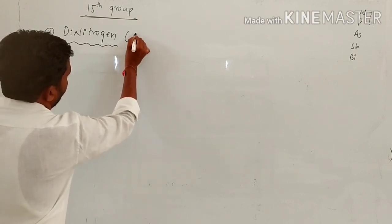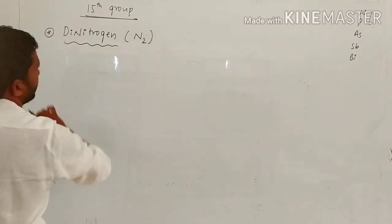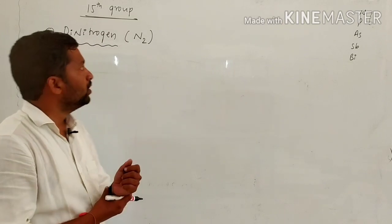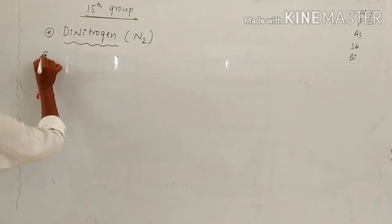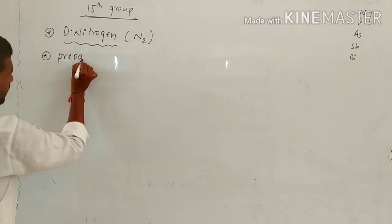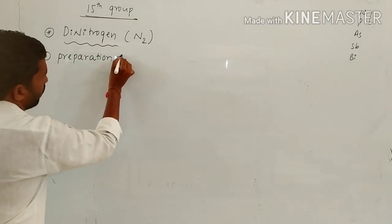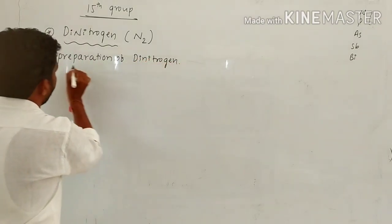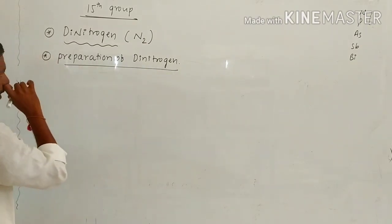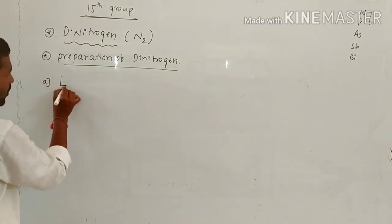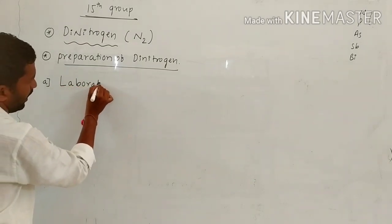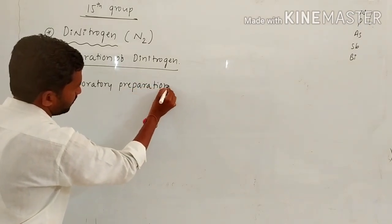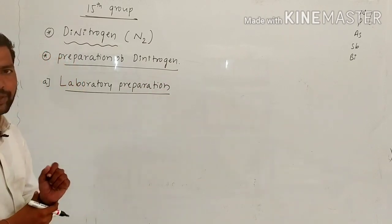This is the compound of nitrogen. Now we will look at the preparation of nitrogen — specifically the preparation of di-nitrogen. The first one is the laboratory preparation of di-nitrogen.